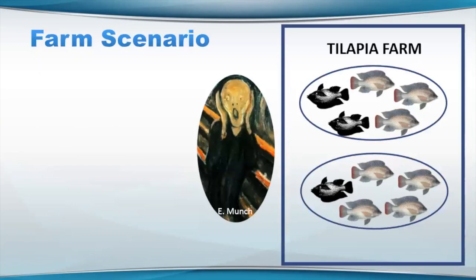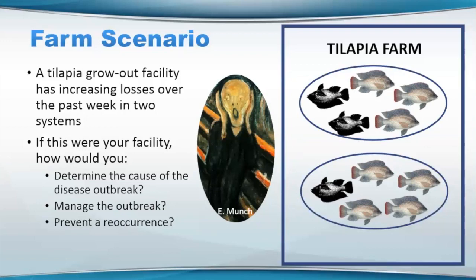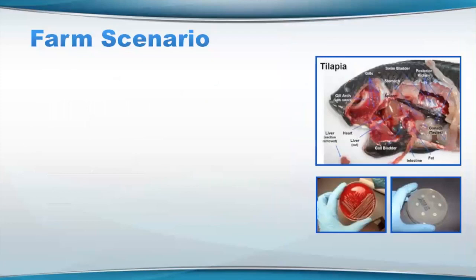Let's start with a farm scenario. Let's say that you are a tilapia producer and you have a grow-off facility with increasing losses over the past week in two of your systems. I've got a picture here with a couple dead tilapia — they are upside down and dark in those systems. So if this were your facility, how would you determine the cause of this outbreak, manage the outbreak, and prevent a recurrence? Do you have a feel for how you would approach that and are you set up to do that in a fairly systematic manner?